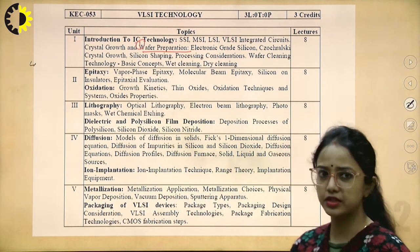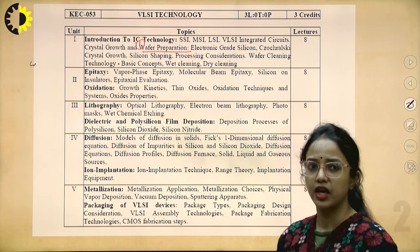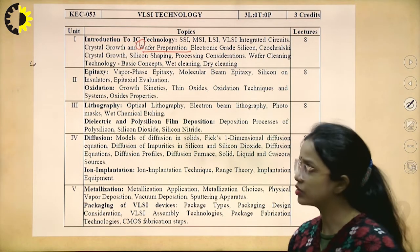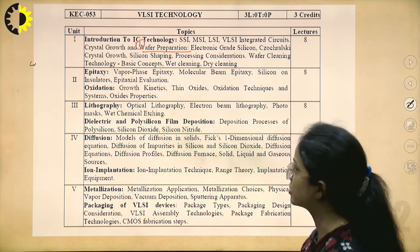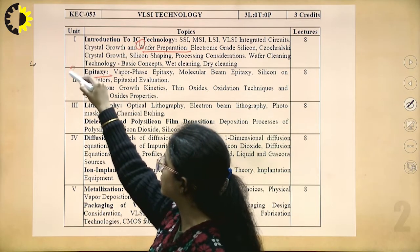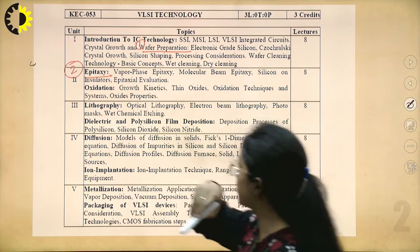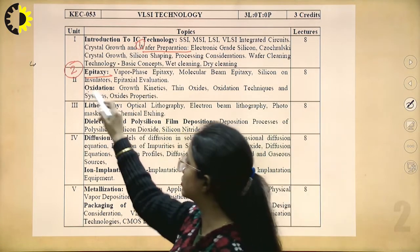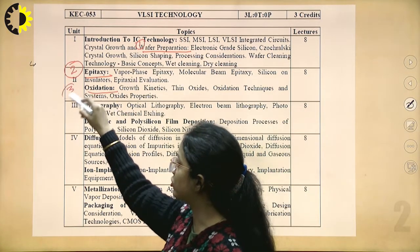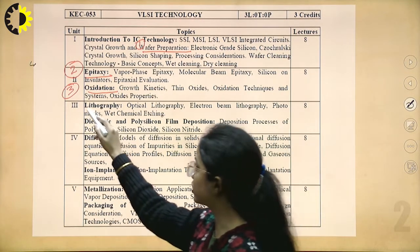There are certain intermediate steps like wafer cleaning — wet cleaning and dry cleaning — but we are not going into that detail. The second step is epitaxy, and the third is oxidation, adding a layer of SiO2. Then we had lithography.